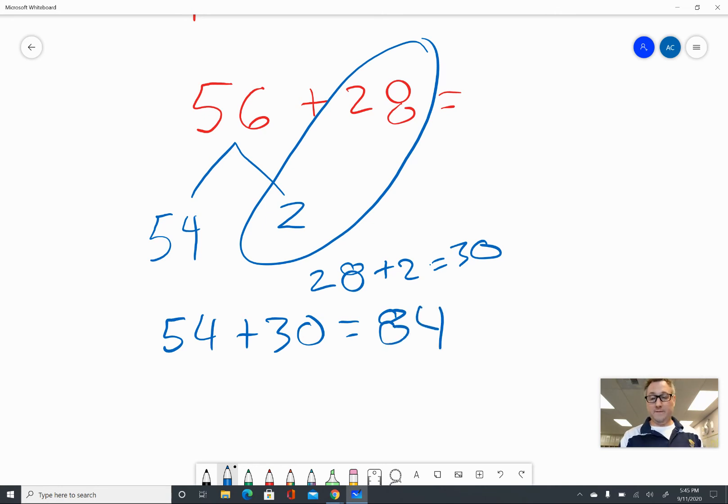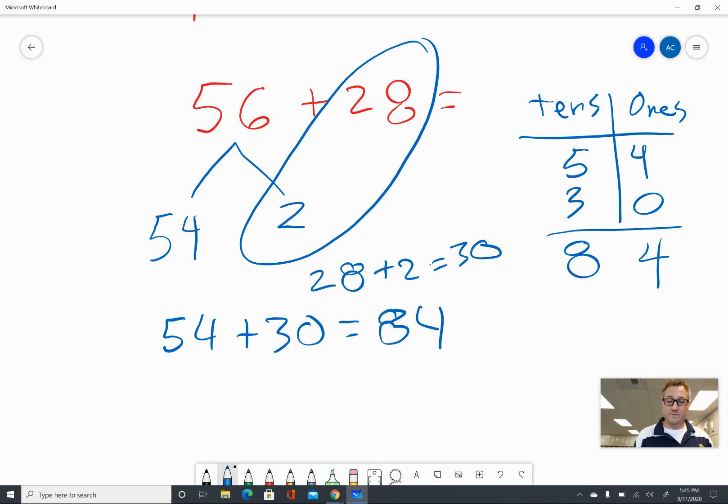Again, if you didn't get 84, here's how that works. I had five tens, four ones, and three tens, zero ones. Four plus zero is still four, and five tens plus three tens is eight tens. 84 is my answer. Go ahead and put that up here. Okay, I don't want to make this video too long, so I'm going to give you one more challenging problem, and then we will call it good.